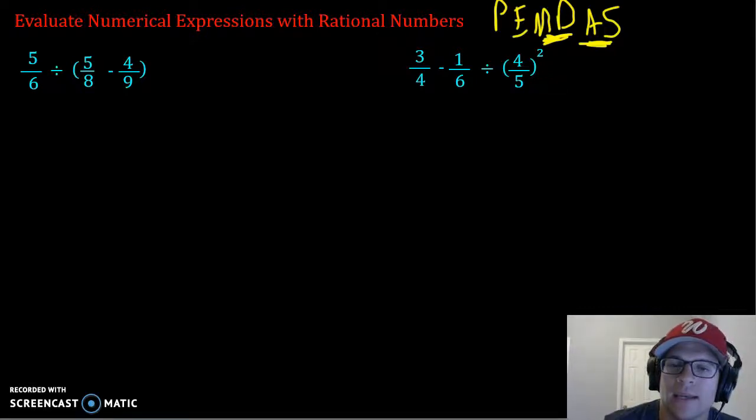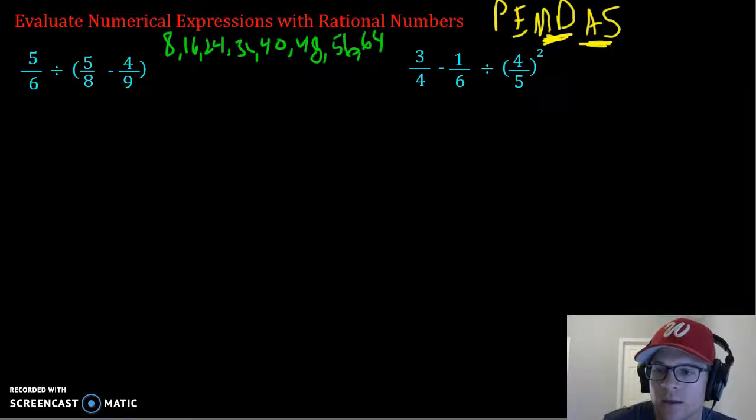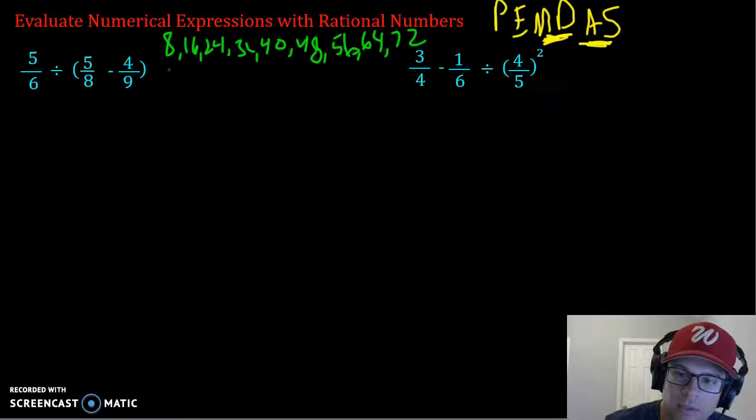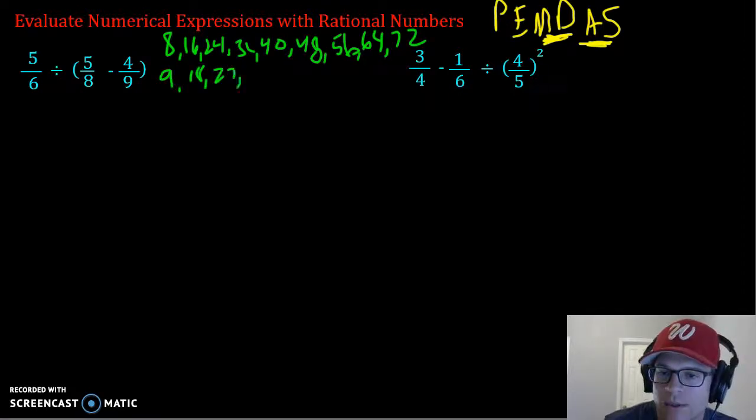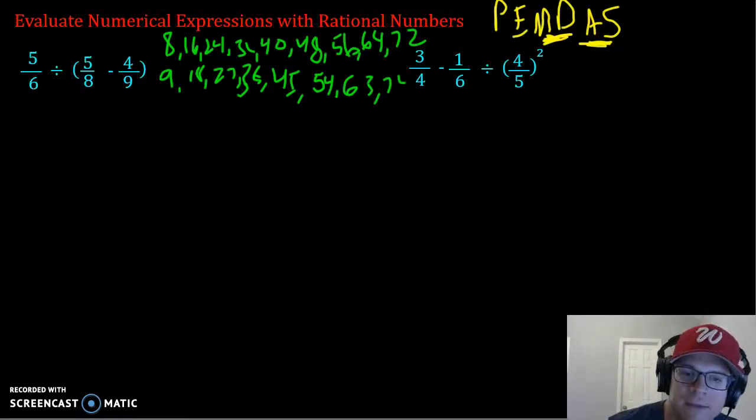So a common denominator between 8 and 9, we have to find the least common multiple. 8 goes to 16, 24, 32, 40, 48, 56, 64, and I think the next one is 72. Same thing with the 9: 18, 27, 36, and 72 is our only common one, so that's what we're going to have to set both of these denominators equal to.